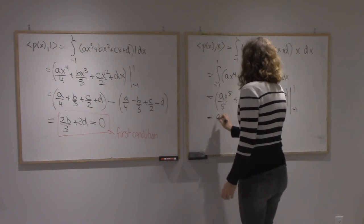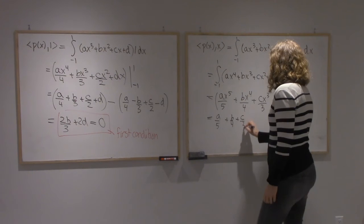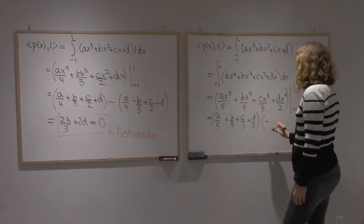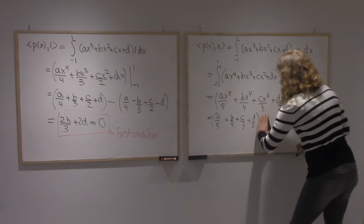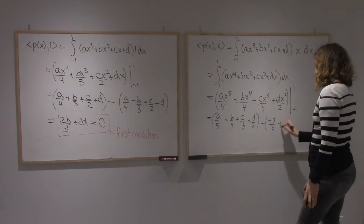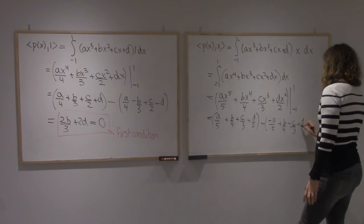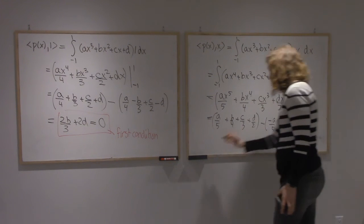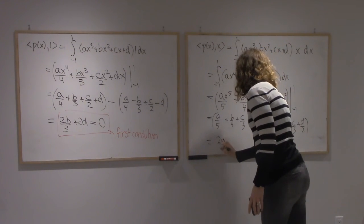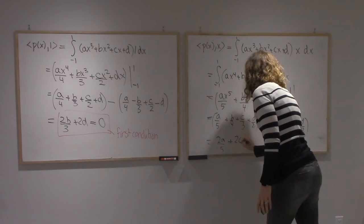And so I get Ax⁵/5 + Bx³/4 + Cx³/3 + Dx³/2 minus Ax³/5 + Bx³/4 - Cx³/3 + Dx³/2. And so here I get 2A/5 + 2C/3. That must be 0 as well.